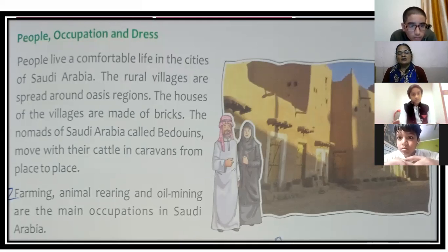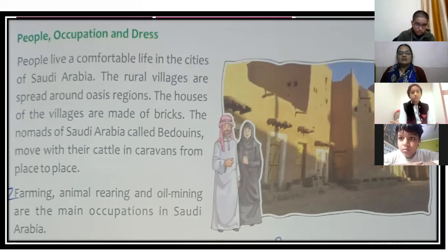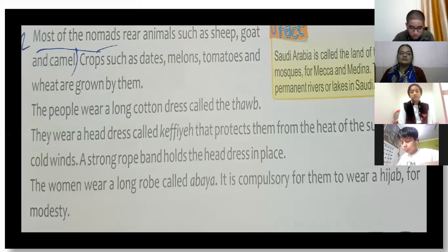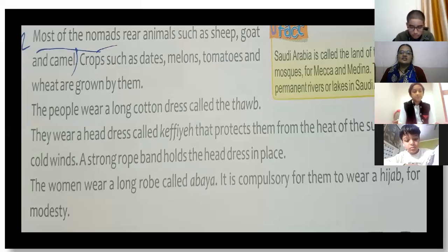The main occupations in Saudi Arabia are farming, animal rearing, and oil mining. Village people do animal rearing and farming. Nomads rear animals such as sheep, goat, and camels.